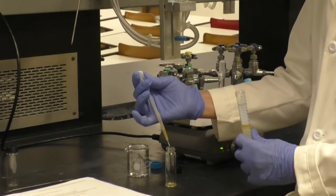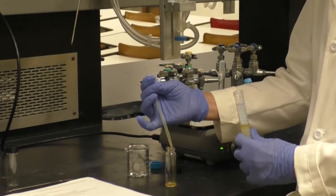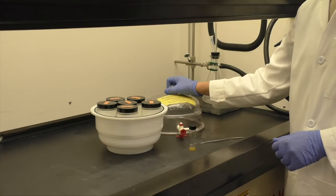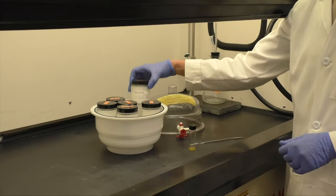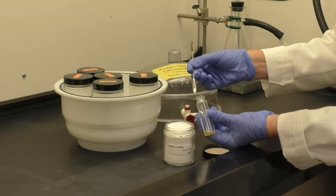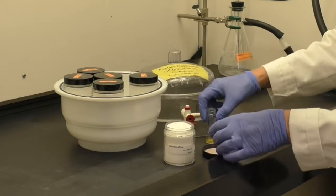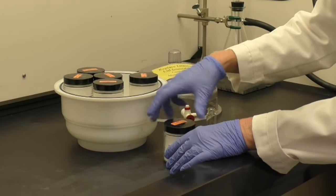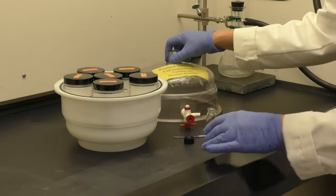Weigh the vial containing the eugenol and record the mass. In order to remove any remaining water, add a small spatula tip full of sodium sulfate. Be sure to label the vial as eugenol. This is your product which you will further analyze.